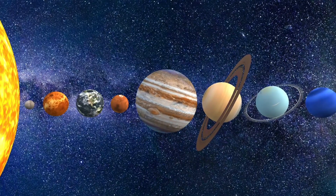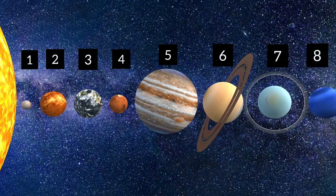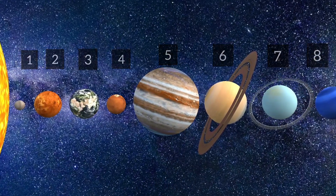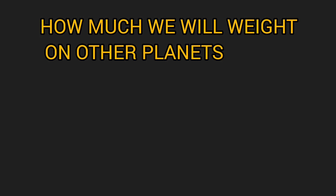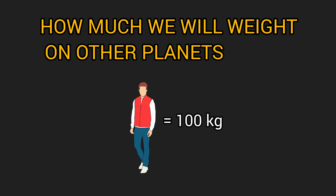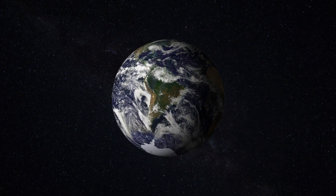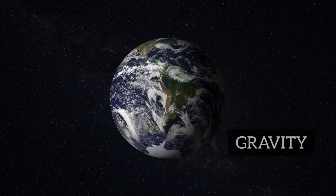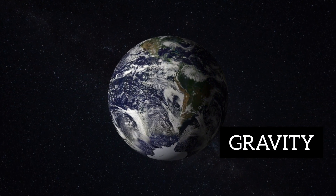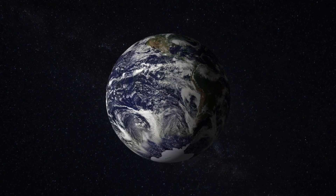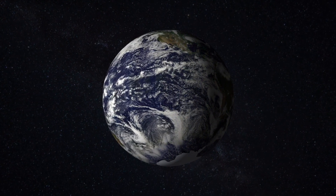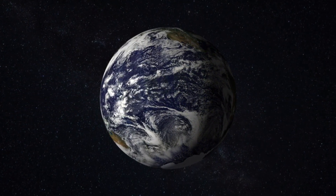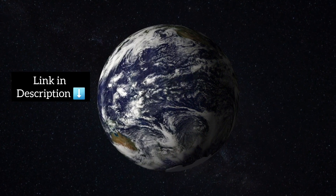In our solar system, there are 8 planets, and the gravitational pull of all 8 planets is different. Let's see how much a person weighing 100 kg would weigh on other planets. We will calculate the weight using the gravity of each planet, with data provided by NASA — the link will be in the description.